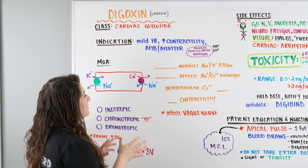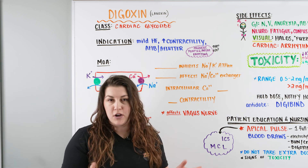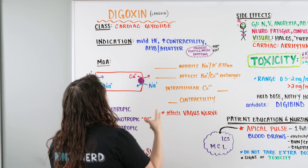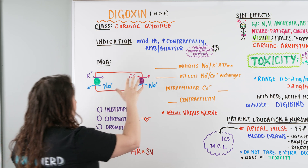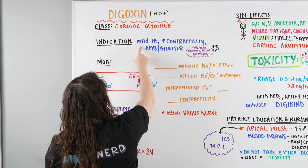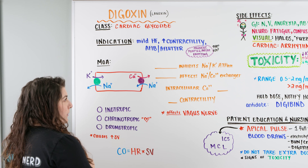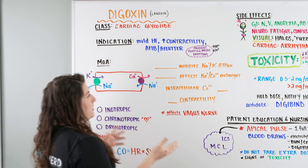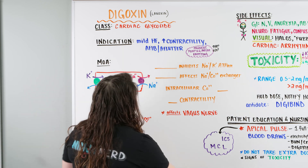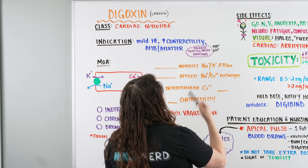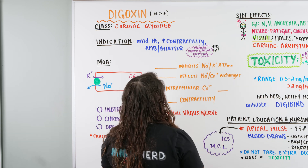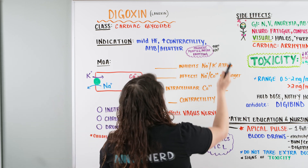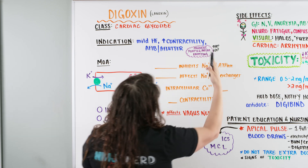Digoxin isn't a medication we give for blood pressure — it's a medication we give for other problems with the heart, like our contractility, problems filling, or even arrhythmias. The indication for Digoxin is someone with mild systolic heart failure, a problem with contractility, or someone with an arrhythmia like AFib or AFlutter — someone who has a problem with either pumping or emptying, needing increased stroke volume or decreased heart rate.